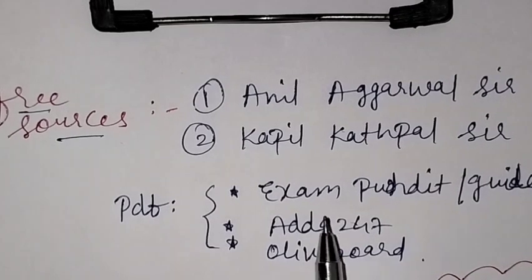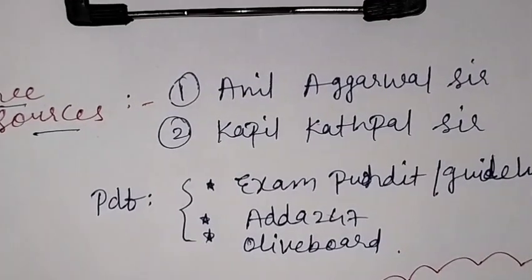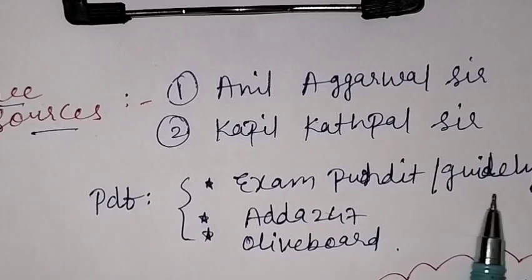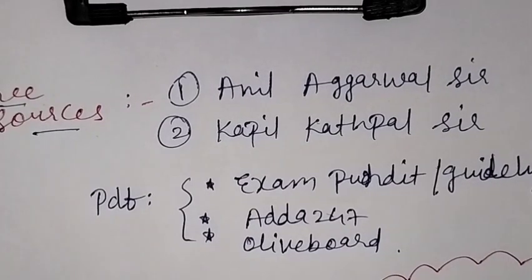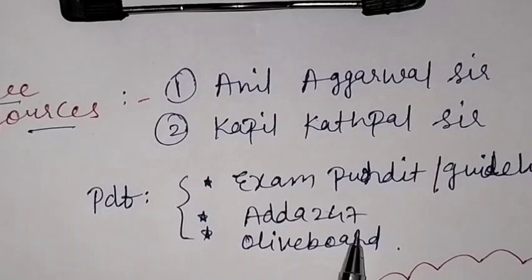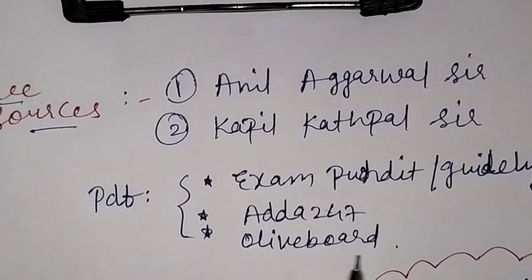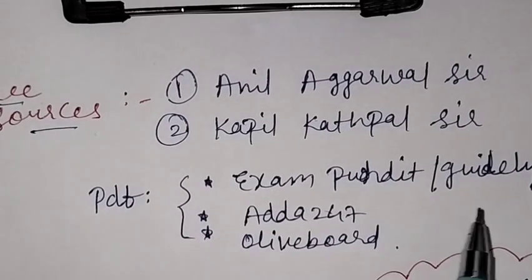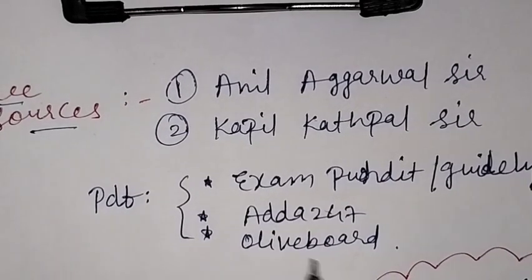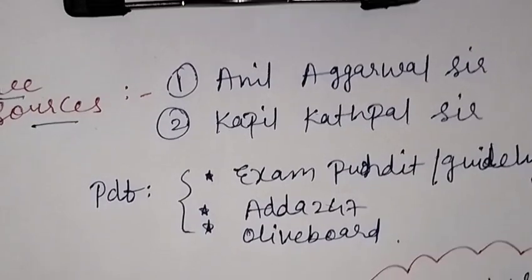And if you talk about the PDF sources, I have already shared it in the Telegram group. So if you haven't joined, do join the Telegram group. I will pin the link in the description. And Adda247 is also a great PDF, which will also be available in your app. And Oliveboard also comes. So I had studied it. Question and answers form in the MCQ form, and details also. So these were free sources.